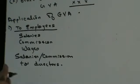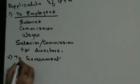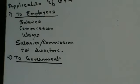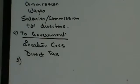The next advantage of preparing the GVA is to the government. How does the government benefit? Whatever is the cess to be collected — your location cess and direct taxes — all that can be easily collected by the government.